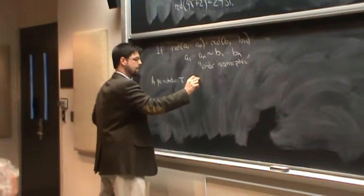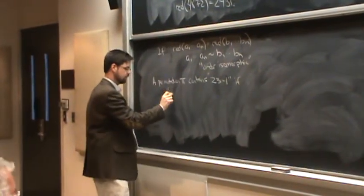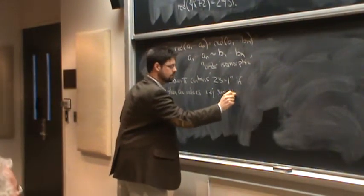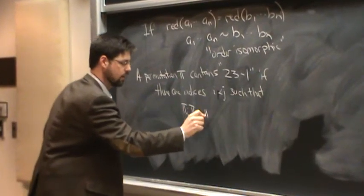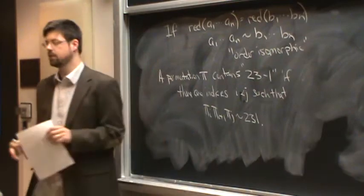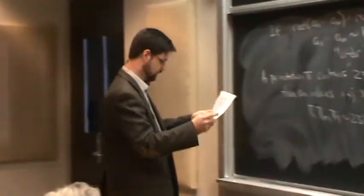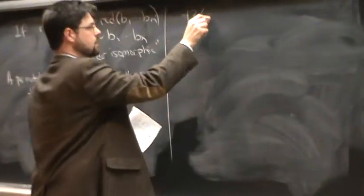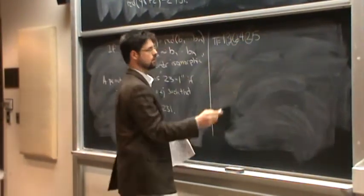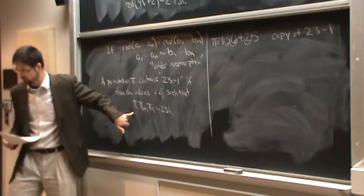A permutation pi contains 2, 3-1 if there are indices i less than j such that pi_i, pi_{i+1}, pi_j, so j needs to be greater than i+1, if those are order isomorphic to 2, 3-1. So we have a middle followed by something higher than it, and then somewhere down the line, there's something even smaller than both of them. For example, 1, 3, 6, 4, 2, 5. If we look at the 3, the 6, and the 2, that is a copy of 2, 3-1.